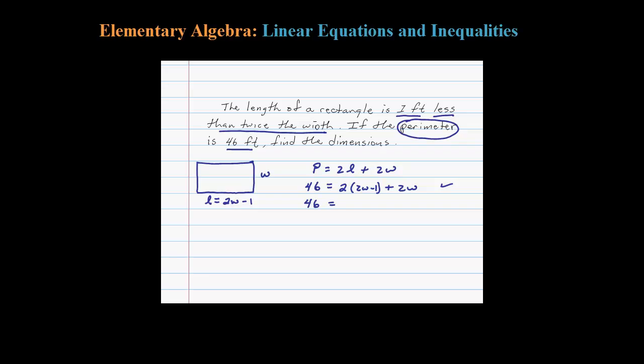Once we get it set up, we just do the algebra here. Notice we have to multiply, so we're required to use the distributive property: 4W minus 2. Bring down the 2W.